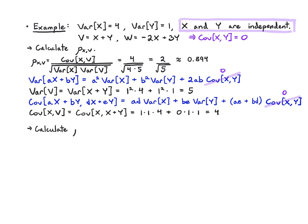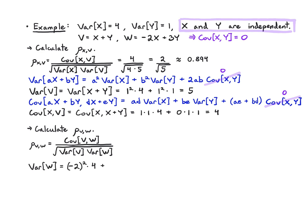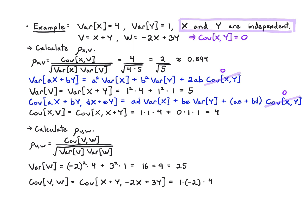Now for the correlation coefficient between v and w, we follow the same process. Var(w) = (-2)² × 4 + 3² × 1 = 16 + 9 = 25. Cov(v, w) = Cov(x+y, -2x+3y) = 1×(-2)×4 + 1×3×1 = -8 + 3 = -5. Therefore rho(v, w) = -5 / sqrt(5 × 25) = -1 / sqrt(5) ≈ -0.447.